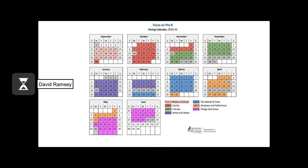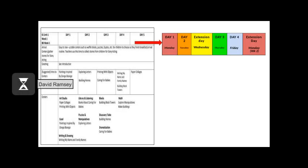Each unit consists of four weeks of content and two extension weeks. You can use these extension weeks to follow children's interests, such as expanding the hardware store to a study of different kinds of tools. Some teachers find that budgeting the 10 days of extension weeks into the four weeks of content is a more doable pace, especially in the first two units.